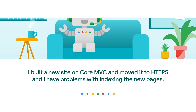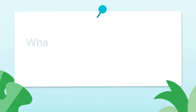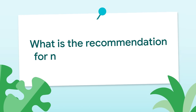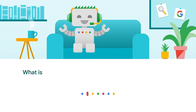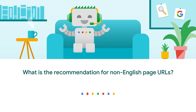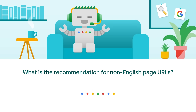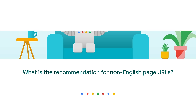Kai is asking: what is the recommendation for non-English page URLs? Would it be better to have English language in the slug or use Chinese characters? It doesn't really matter all that much, but using the language of the content also in the URLs can be helpful sometimes for search and for users.